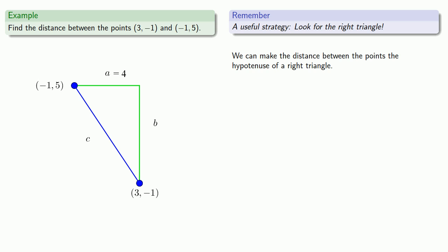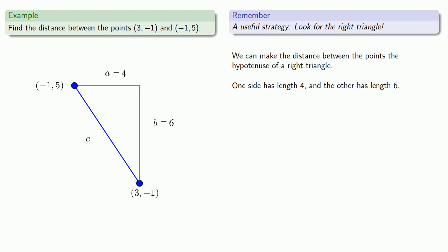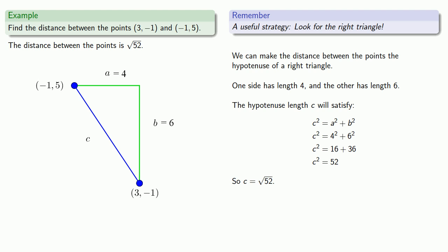The vertical side starts at the same level as a point with y-coordinate 5 and drops down to a point with y-coordinate negative 1, so the length of this vertical side is 6. Now I have two sides of the right triangle and I can find the third side. The hypotenuse C satisfies C squared equals A squared plus B squared. Replacing our values for A and B, then solving for C — and since C is a distance, we only need the principal square root — we find the distance between the two points is the square root of 52.